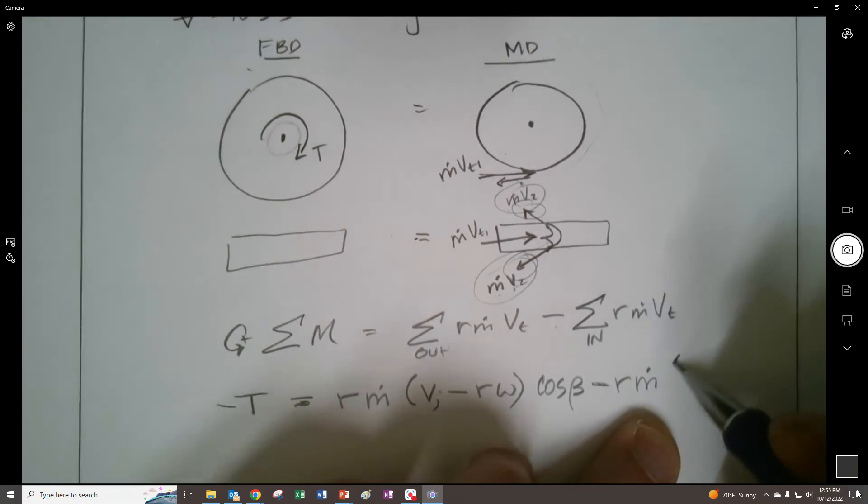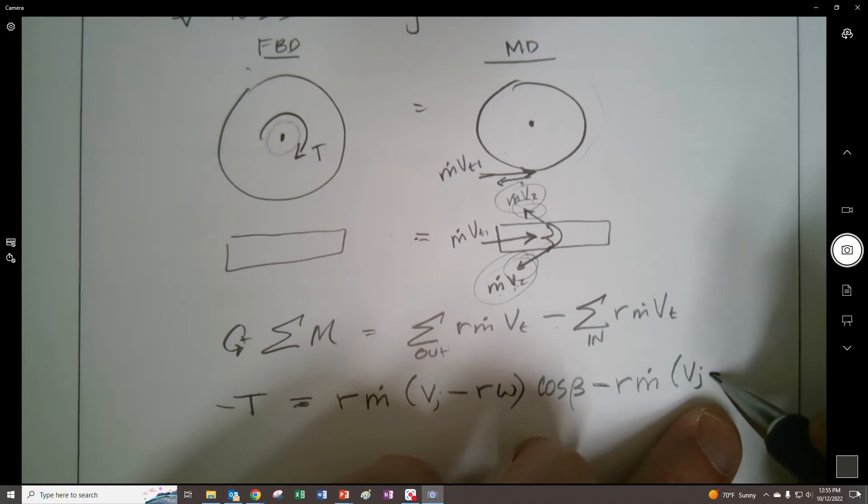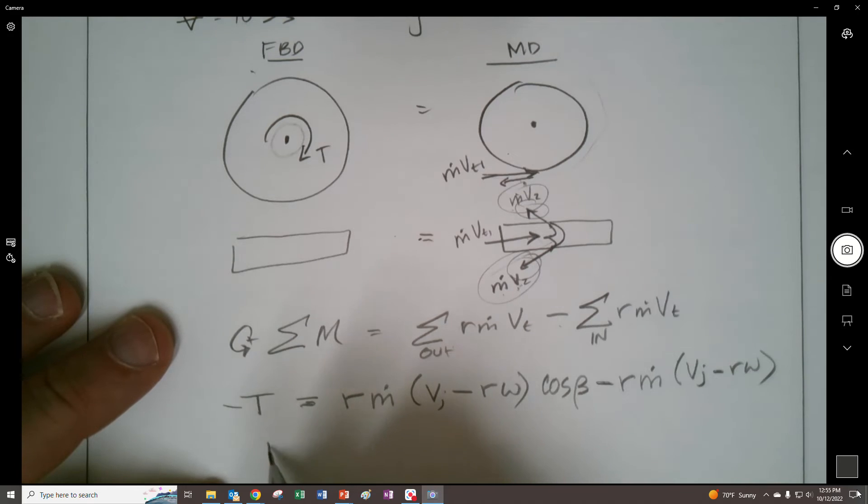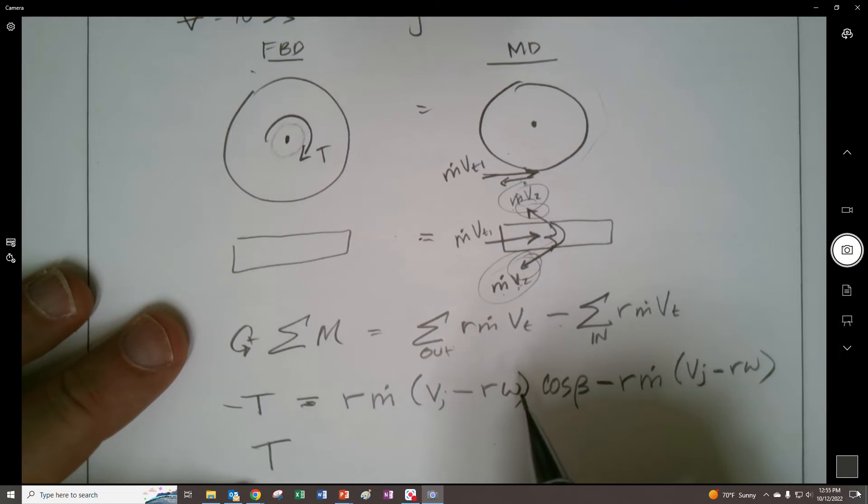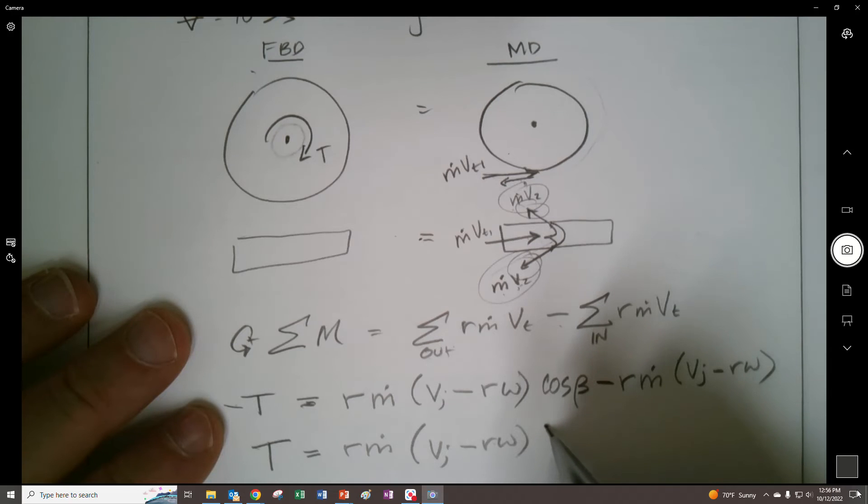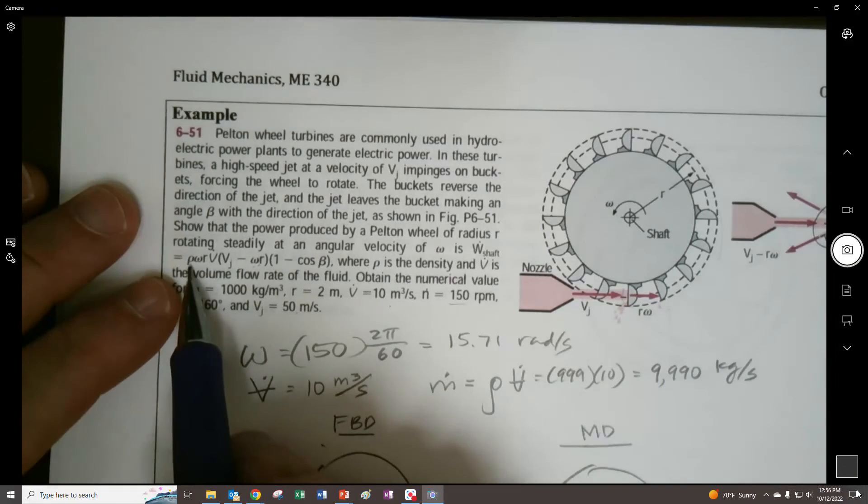There's a lot of things I want to kind of argue with on this particular example. But let's just keep going. We're going to have VJ minus the R omega. So what we're left with in terms of the torque onto the thing is going to be equal to the R M dot VJ minus R omega. And because that negative sign is going to reverse this whole thing, it's going to be one minus the cosine right there. So that right there is quasi what they've done right up here. The density times volumetric flow rate.